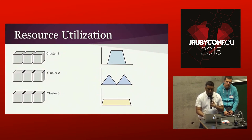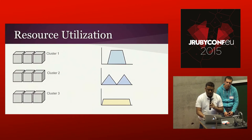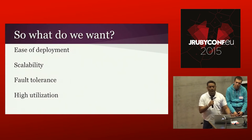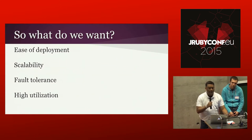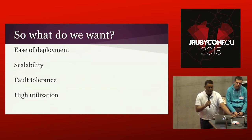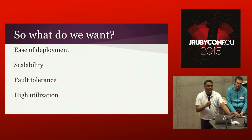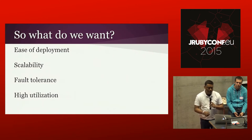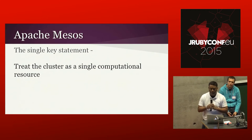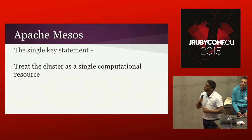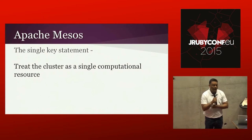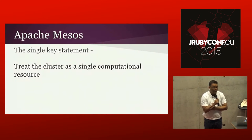We had all this unused resource while paying so much for these servers. So we came up with a list of things we wanted for our infrastructure: as developers we want ease of deployment, scalability, and fault tolerance; as ops we want high utilization. We then stumbled upon Apache Mesos, which we found was quite suitable for our needs.